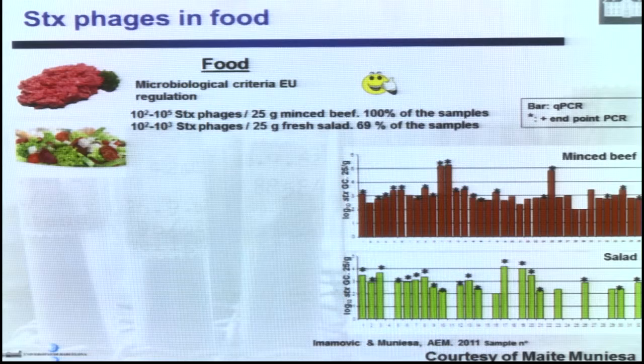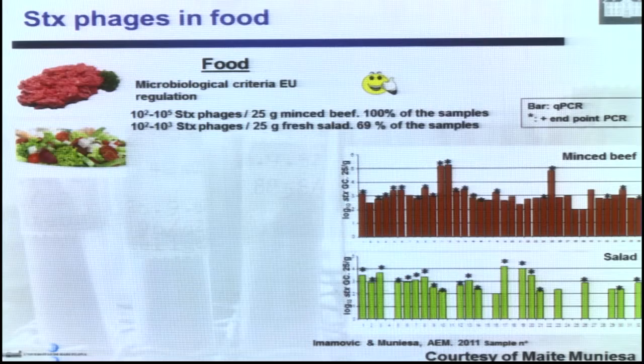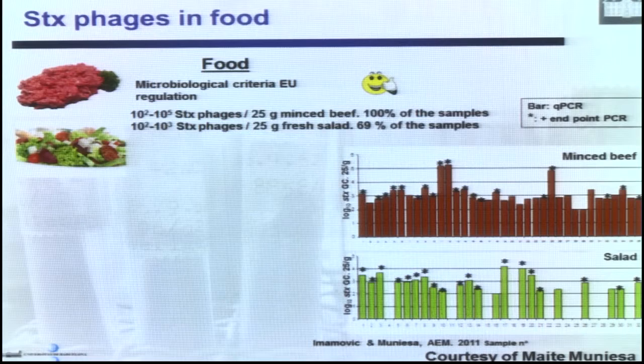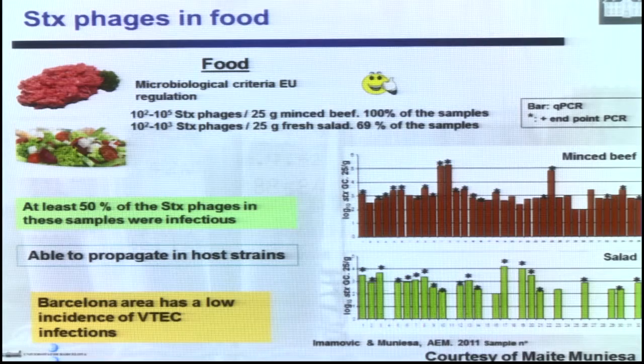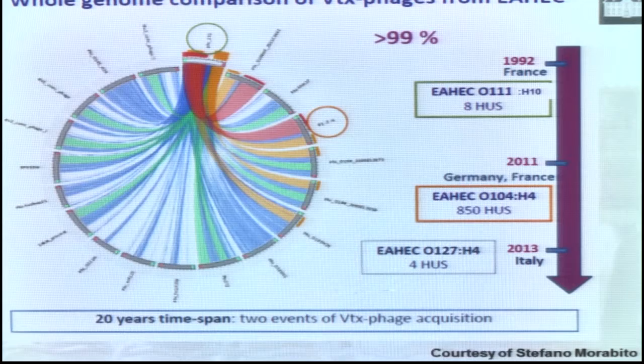STX phages are also found in food. Another study from Spain found 100% of minced meat samples and 69% of fresh salad samples had STX phages. So if you use just PCR to see if STX was present in these foods, you would find them positive, but they would only represent phages. At least 50% of these phages are also infectious — meaning they can go into other bacteria and propagate in host strains — yet in Barcelona, where this study was conducted, there is a very low incidence of VTX infections.